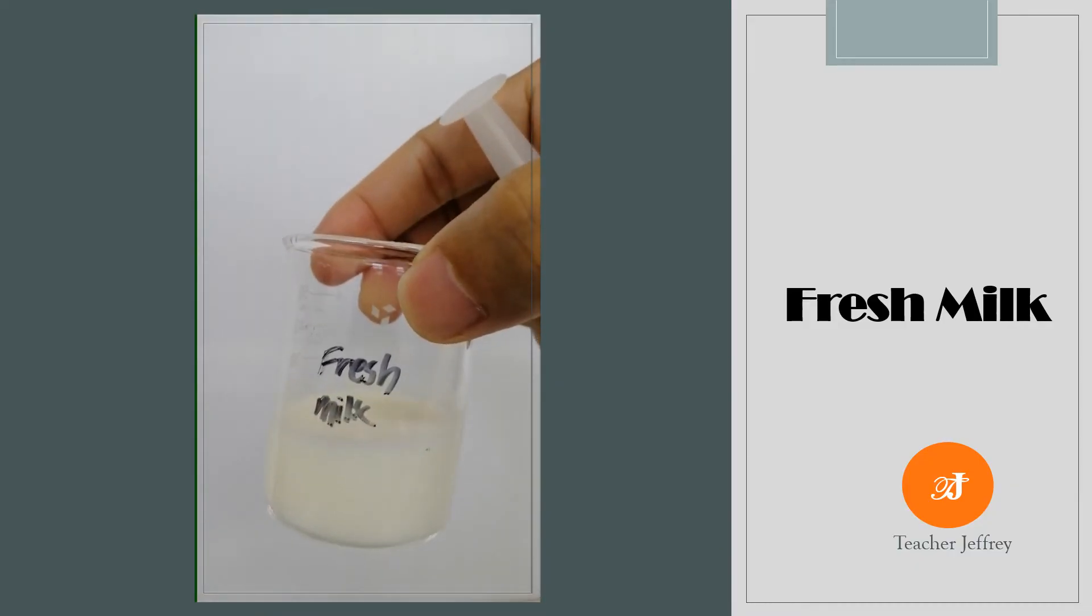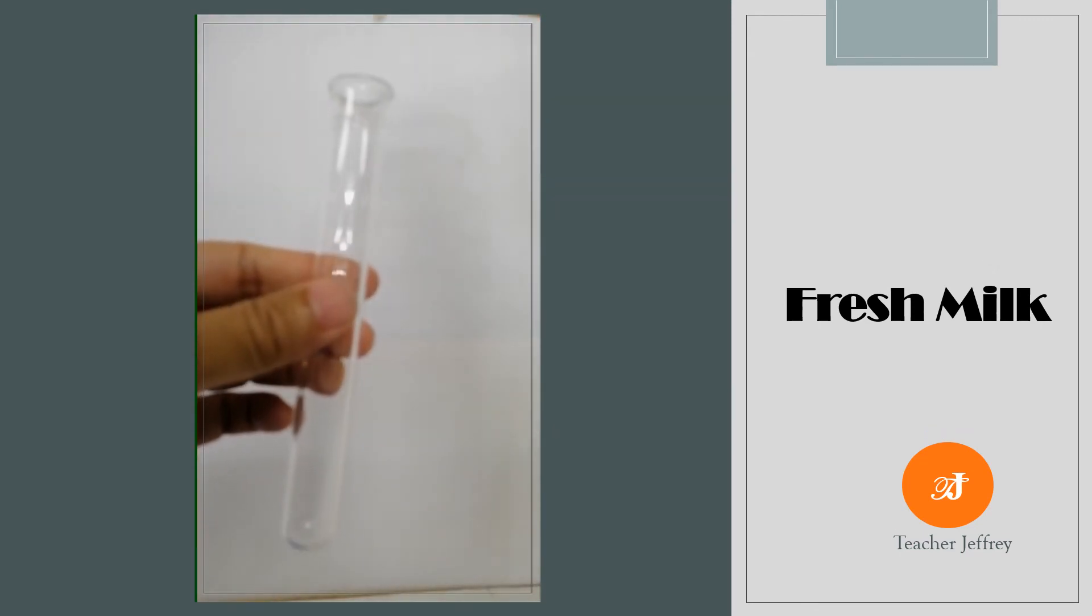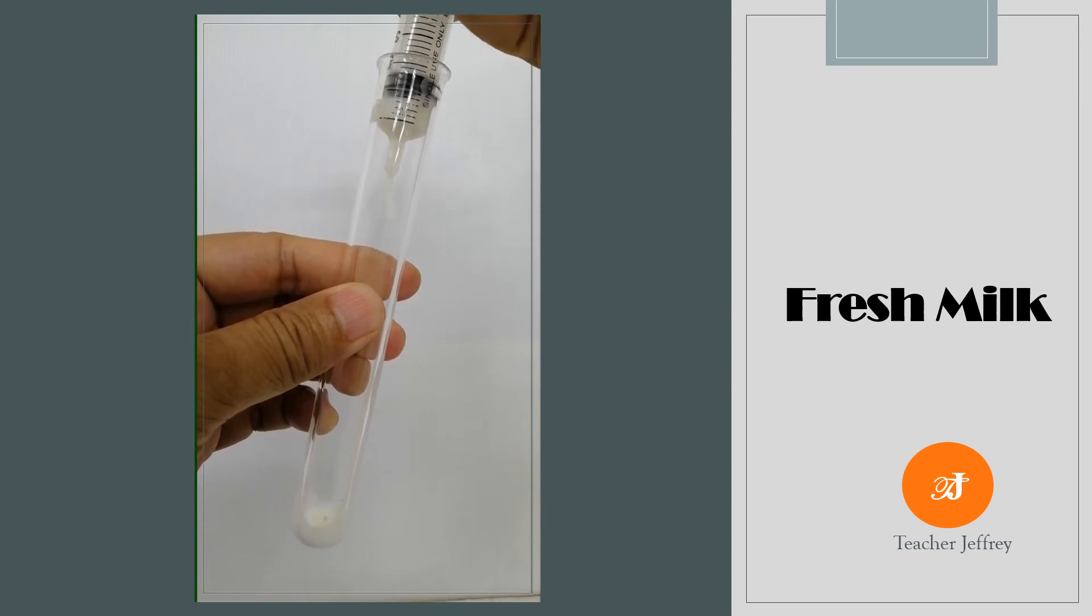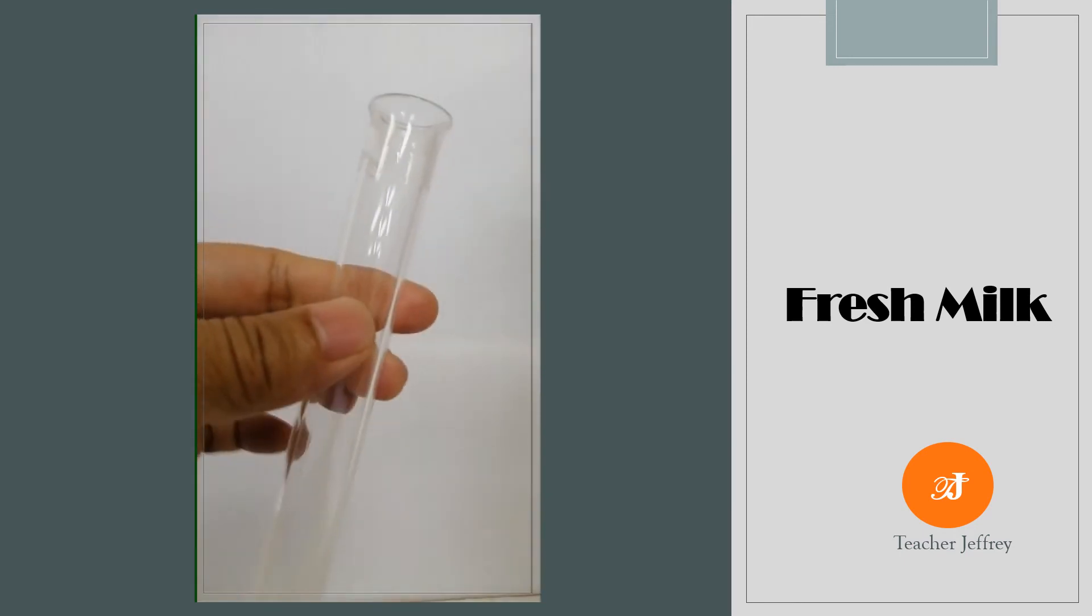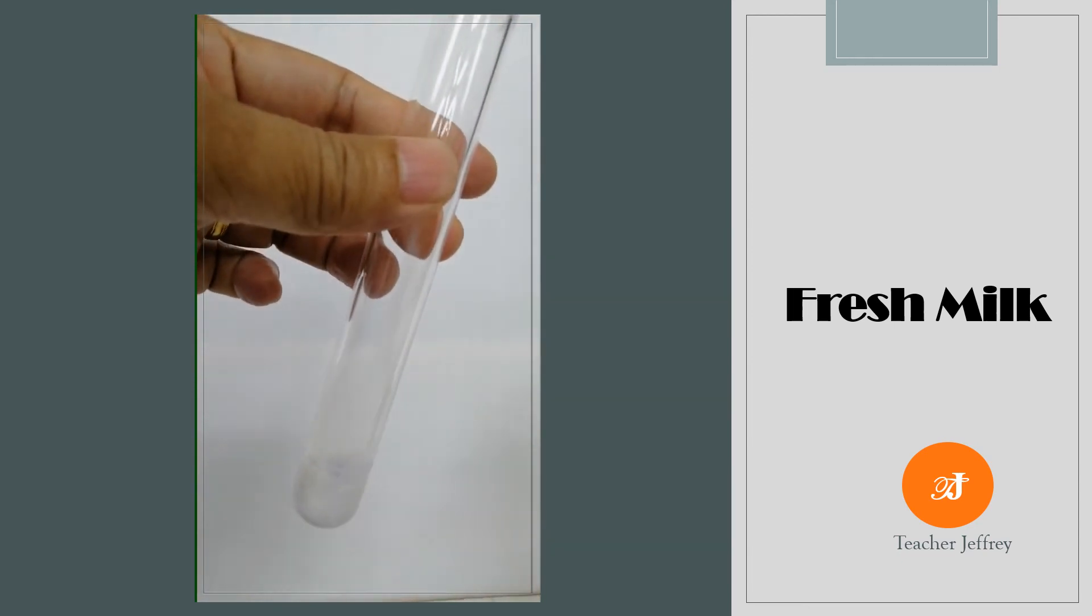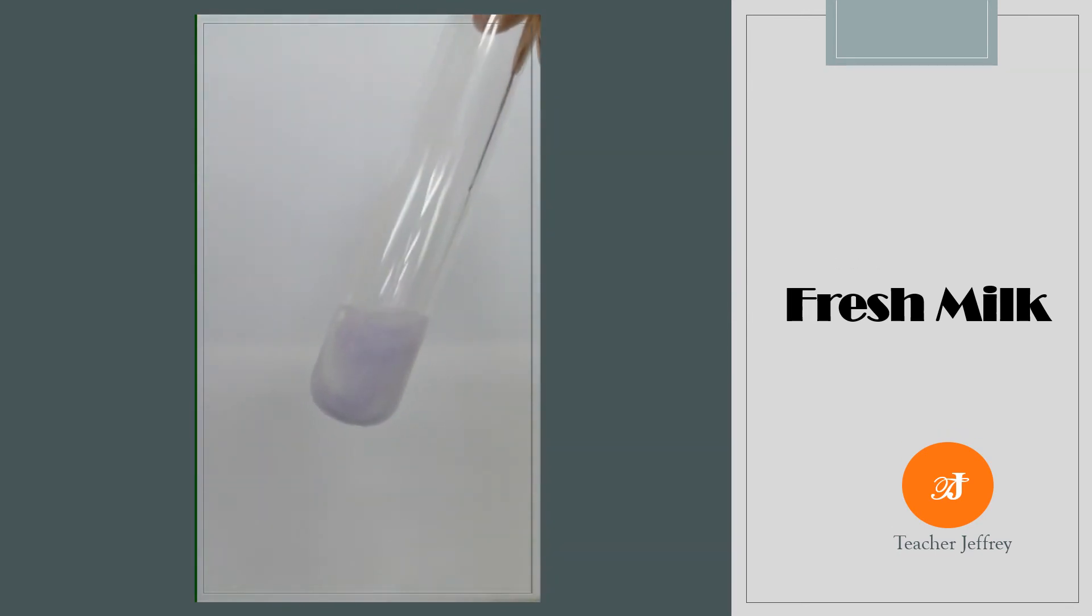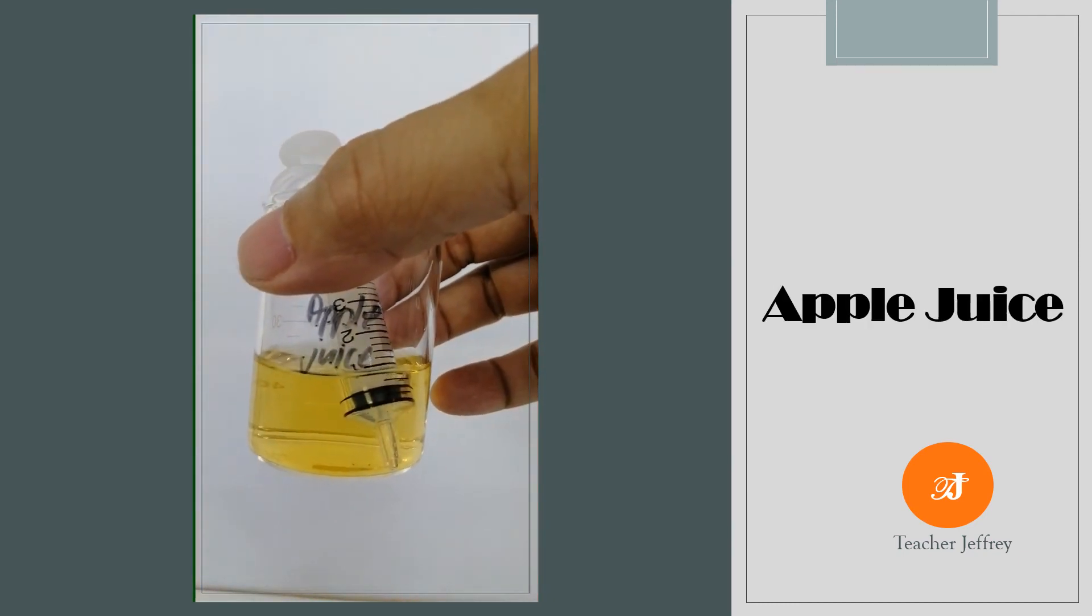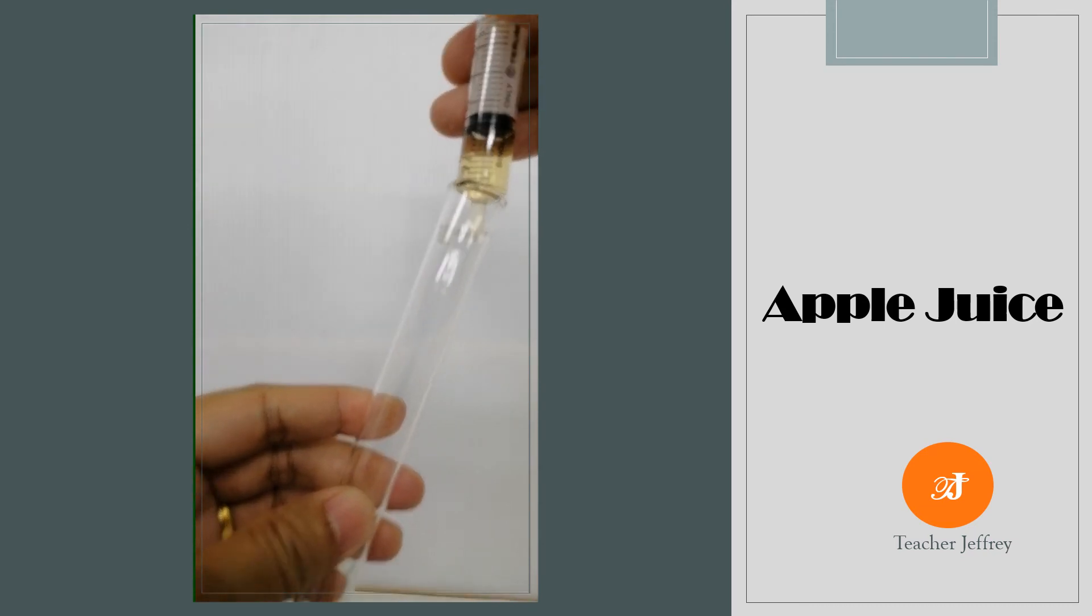Fresh milk. We place 2 cubic centimeters of fresh milk into the test tube. Add Biuret reagent. Shake to mix.